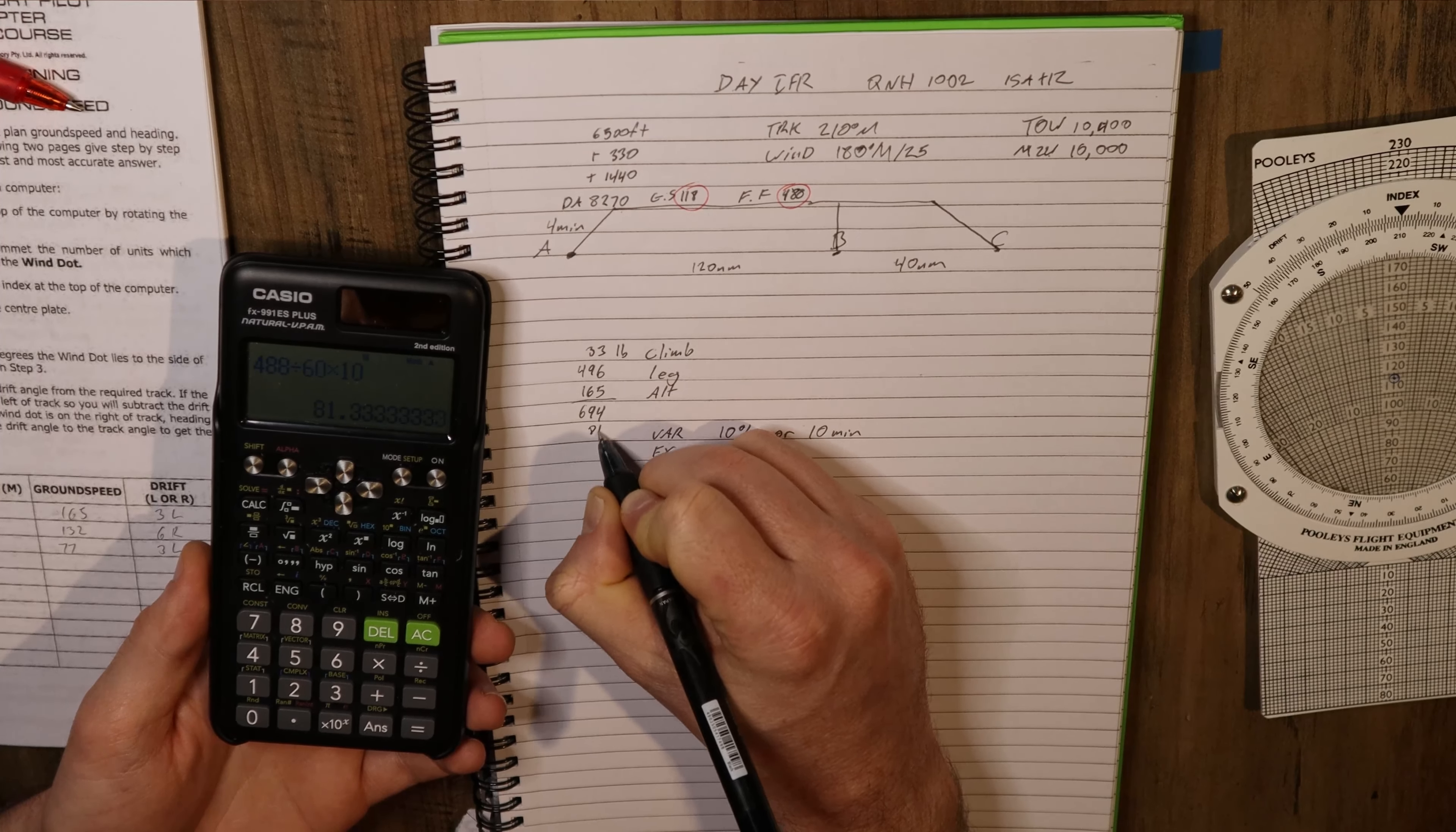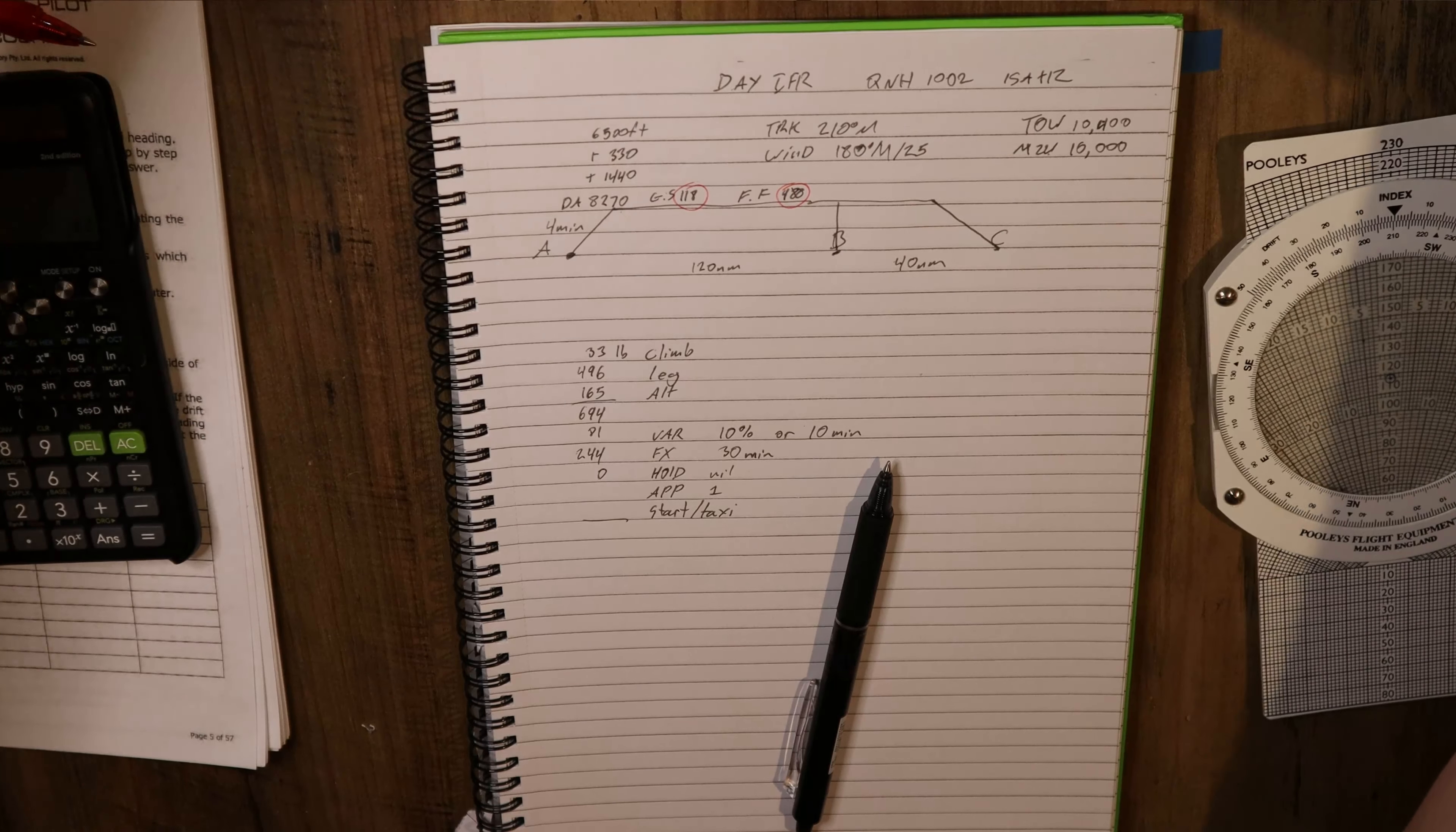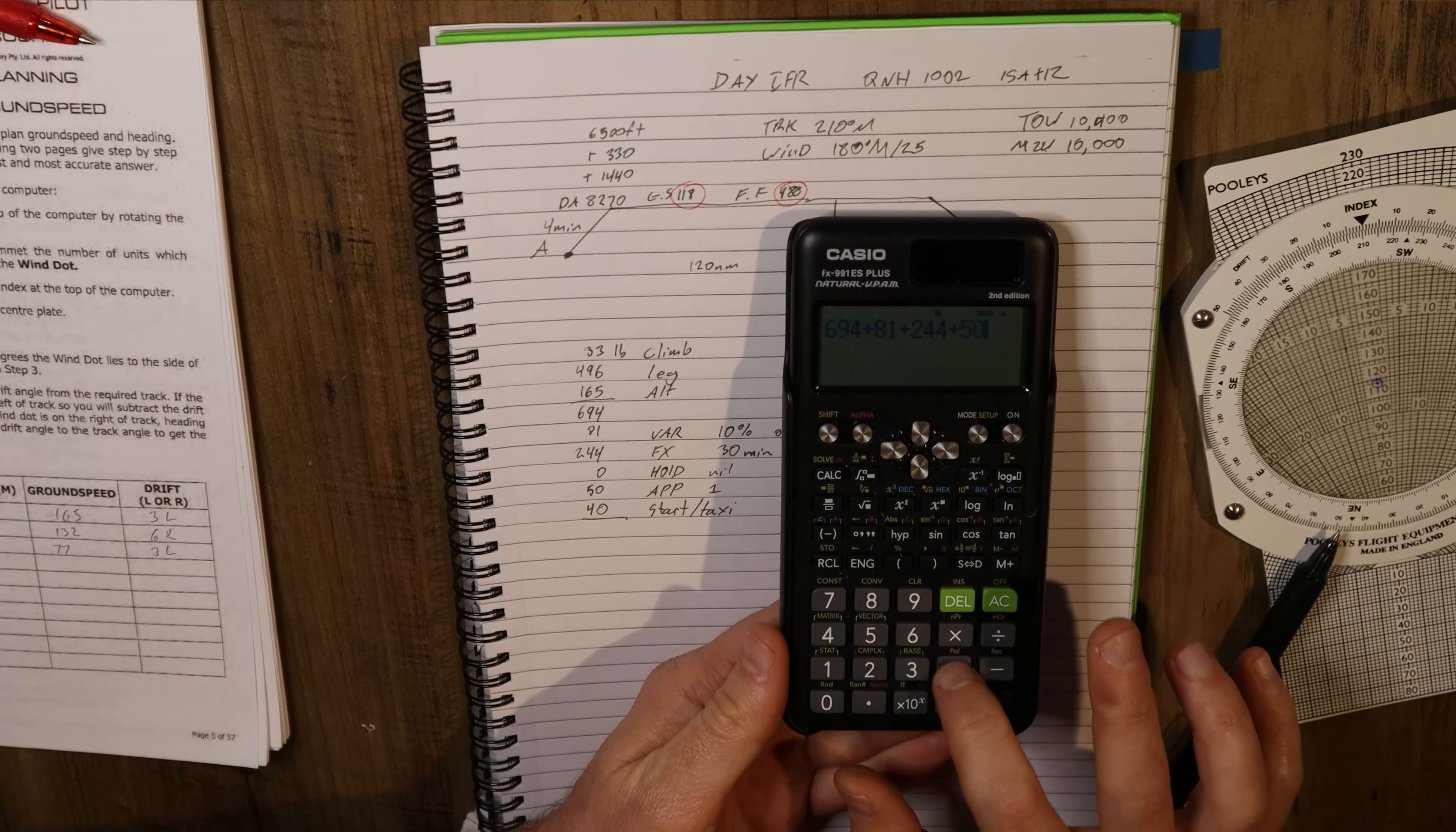Fixed reserve is 488 divided by 60 times 30, which is 244. We have no hold and we have one approach and one start. Let's look back at our sheets again. An instrument approach is 50 pounds and a startup and taxi is 40 pounds. So an instrument approach 50 pounds, start taxi 40 pounds. Now we're going to add all of these together: 694 plus 81 plus 244 plus 50 plus 40 gives us 1109 pounds.